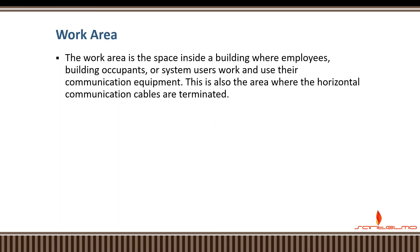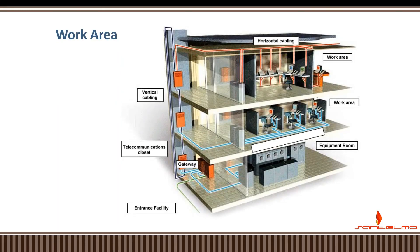The last area is the work area. The work area is where the workstations are located — where the end users in the production area work. It is the space inside the building where employees, building occupants, or system users work with their communication equipment. This is also the area where the horizontal communication cables are terminated. In this example, this is where your workers and programmers are working, and where the horizontal cable is terminated via the wall plates.